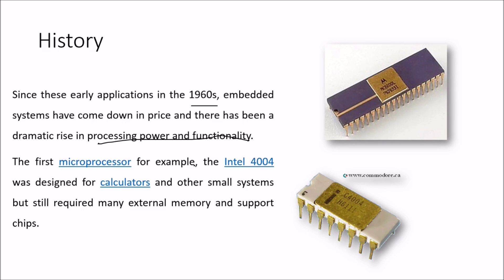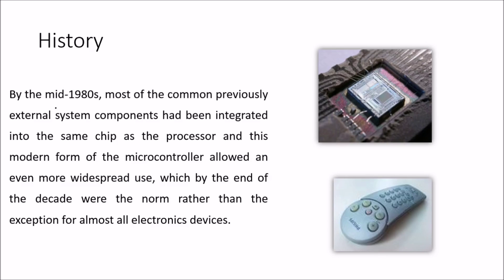The first microprocessor, for example the Intel 4004, was designed for calculators and other small systems, but still required many external memory and support chips. By the mid-1980s, most of the previously external system components had been integrated into the same chip as the processor. This modern form of microcontroller allowed even more widespread use, and by the end of the decade it was the norm rather than the exception for almost all electronic devices.